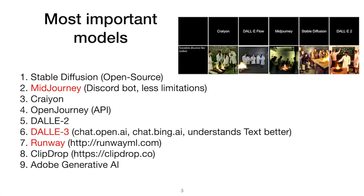Then there's MidJourney, which is the main tool for image generation since the beginning. It's implemented as a Discord bot. It's the most user unfriendly, but at the same time has fewer limitations. It still has limitations — you cannot generate criminal activity or adult content — but otherwise it has fewer limitations than other tools.